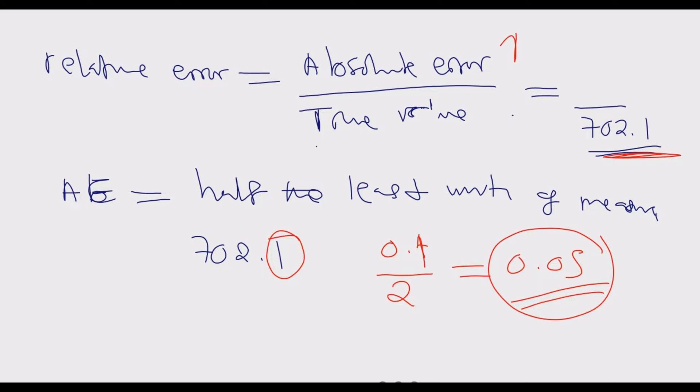Then we divide. Once we find that, we put this number here and simplify. We simplify to the simplest term. Once we do that, we have found the relative error.